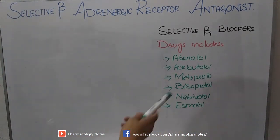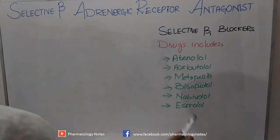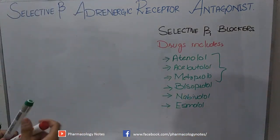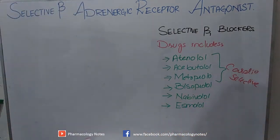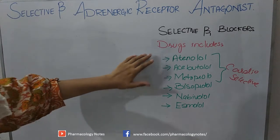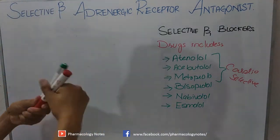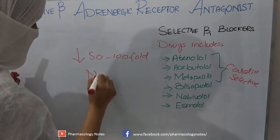The selective beta-1 receptor blockers include atenolol, acebutolol, metoprolol, bisoprolol, nebivolol, and esmolol. These drugs block only beta-1 receptors and are termed cardioselective drugs. They are effective for cardiac actions at low doses but lose their selectivity at high doses.